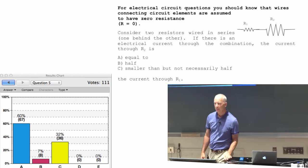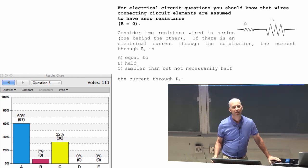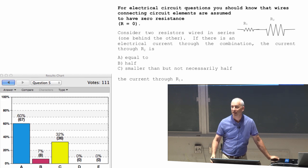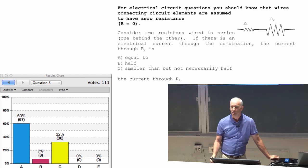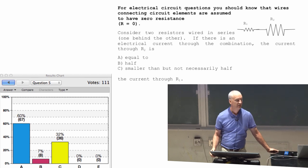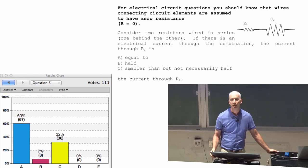Any questions about that one? Conservation of matter would be one way of explaining that. Electrons are conserved. If there's electrons going through R1, same number per unit time are going through R2.